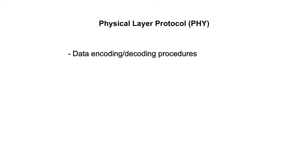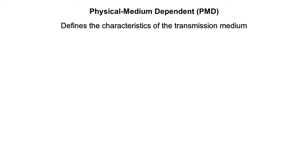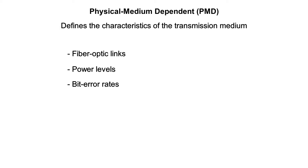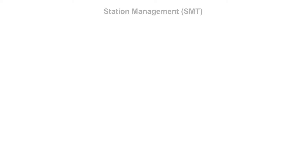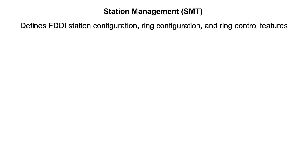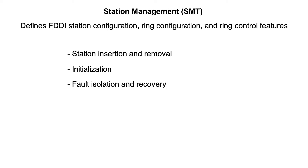The PHY specification defines data encoding and decoding procedures, clocking requirements, and framing, among other functions. The PMD specification defines the characteristics of the transmission medium, including fiber-optic links, power levels, bit error rates, optical components, and connectors. The SMT specification defines FDDI station configuration, ring configuration, and ring control features, including station insertion and removal, initialization, fault isolation and recovery scheduling, and statistics collection.